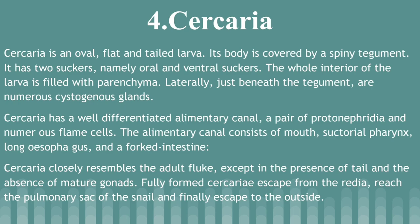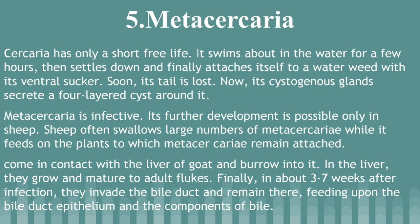The fifth and last larval stage is Metacercaria. Cercariae has a short, free life. It swims in water for a few hours, then settles down and attaches itself to water weeds with its ventral sucker. Soon its tail is lost, and its cystogenous glands secrete a four-layered cyst around it. Metacercaria is infective; its further development is possible only in sheep. Sheep often swallow a large number of Metacercariae while feeding on plants to which they remain attached. They come in contact with the liver and burrow into it, where they grow and mature into adult flukes. Finally, in three to seven weeks after infection, they invade the bile duct and remain there, feeding upon the bile duct epithelium and components of bile.